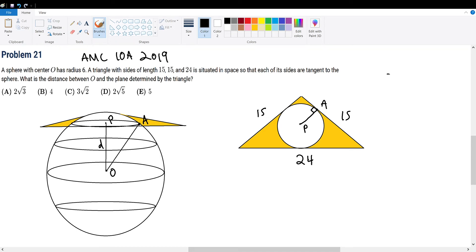AMC 10A 2019 problem 21. We're given a sphere with center O and radius 6, and a triangle that cuts the sphere at a certain point with side lengths 15, 15, 24. The triangle is situated so that its sides are tangent to the sphere. What is the distance between O and the point in the plane determined by the triangle?